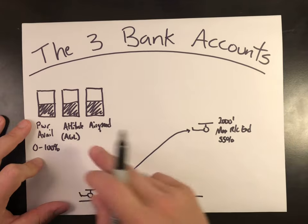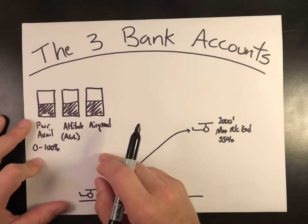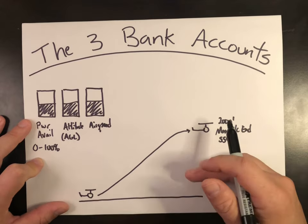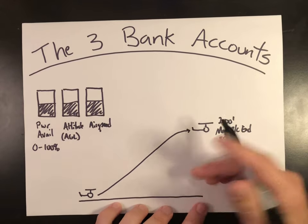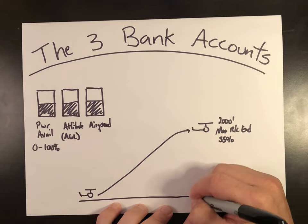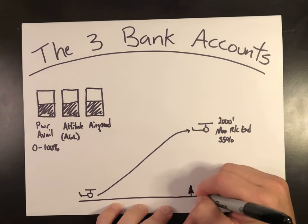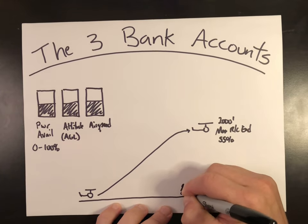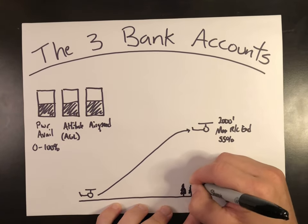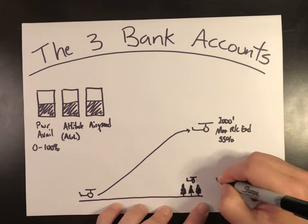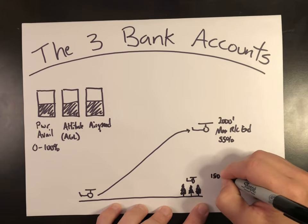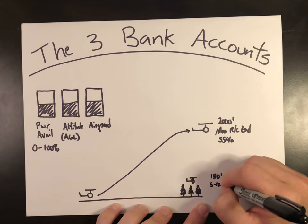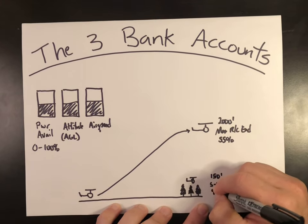Having the other two bank accounts — altitude and airspeed — increases your options: where can you go, and how long do you have in the air to make a decision? Now compare that same scenario to a helicopter operating at treetop level — roughly 150 feet AGL, five to ten knots, and 95 percent power.